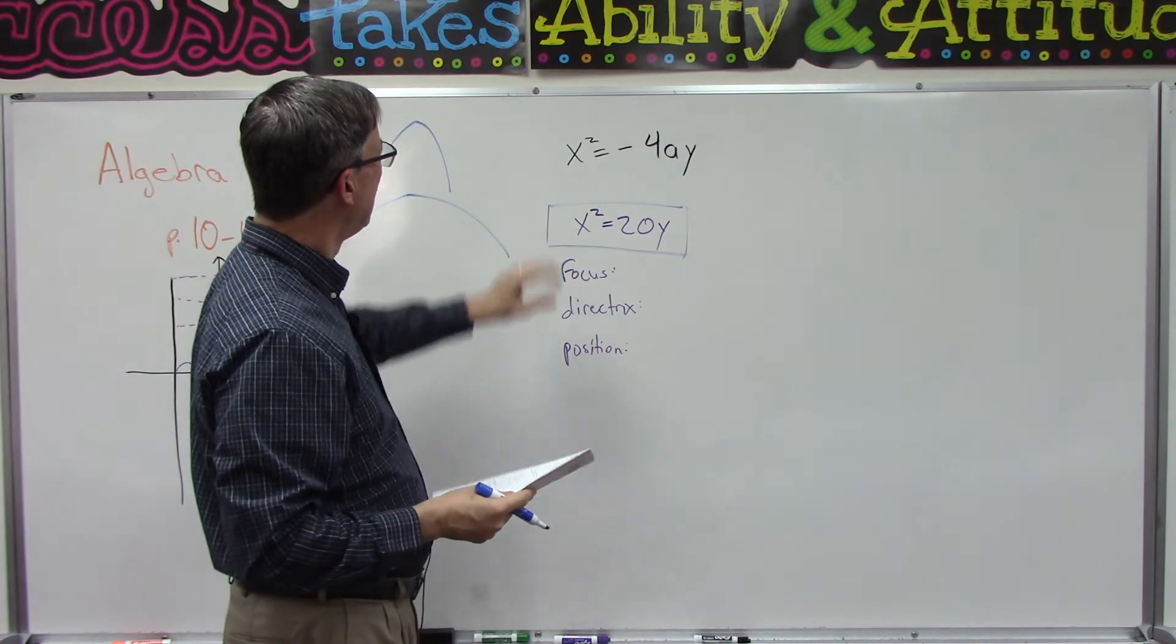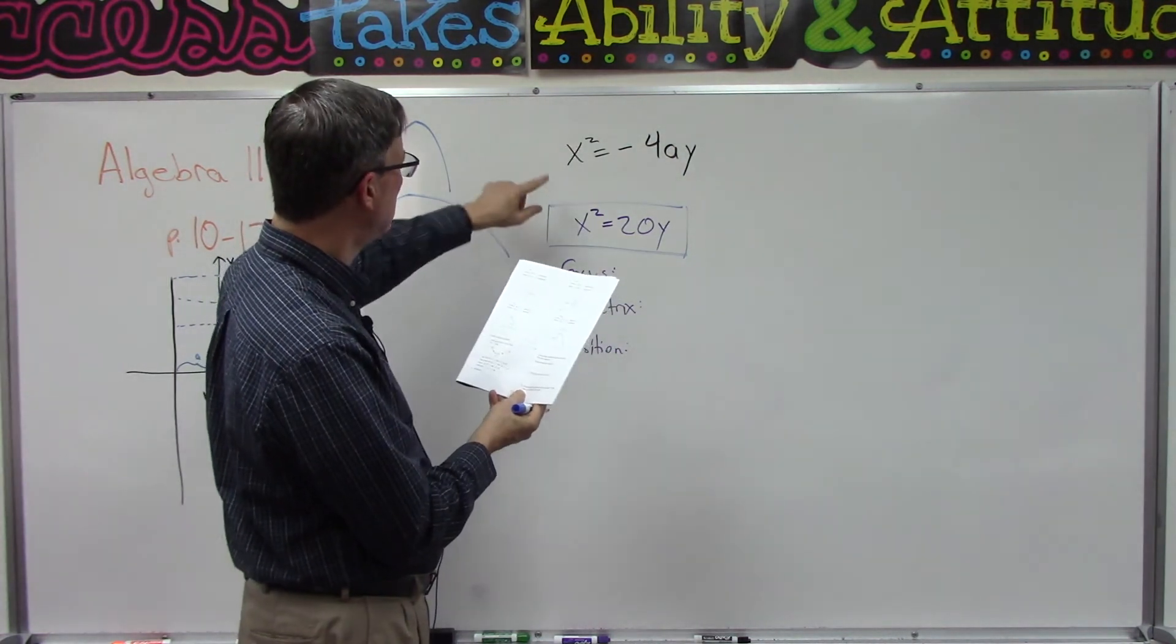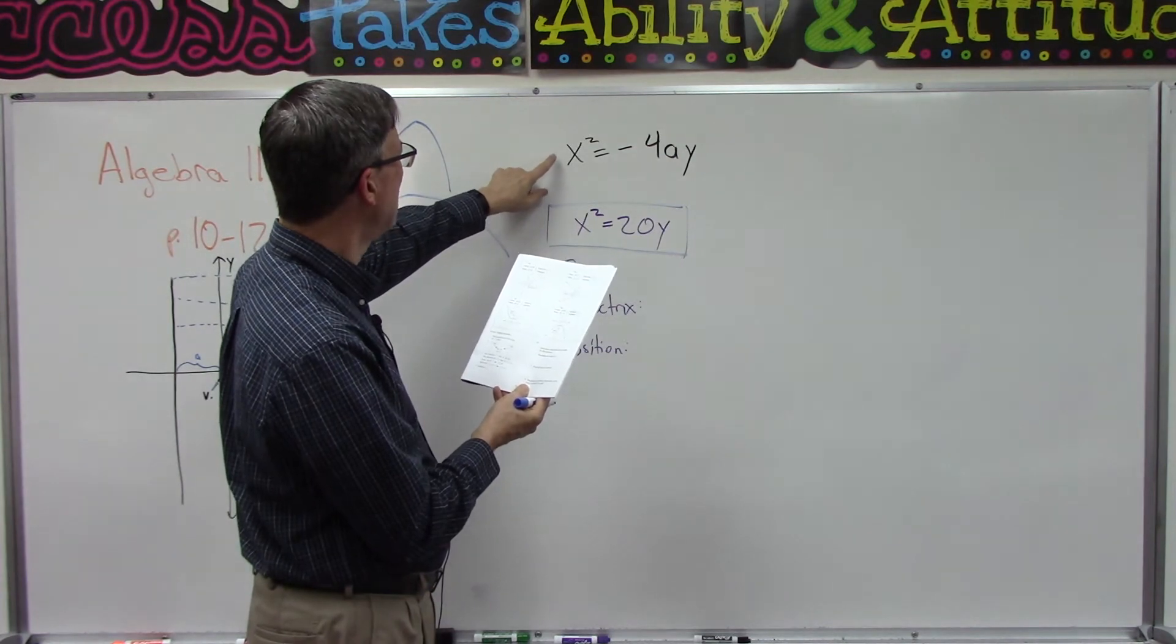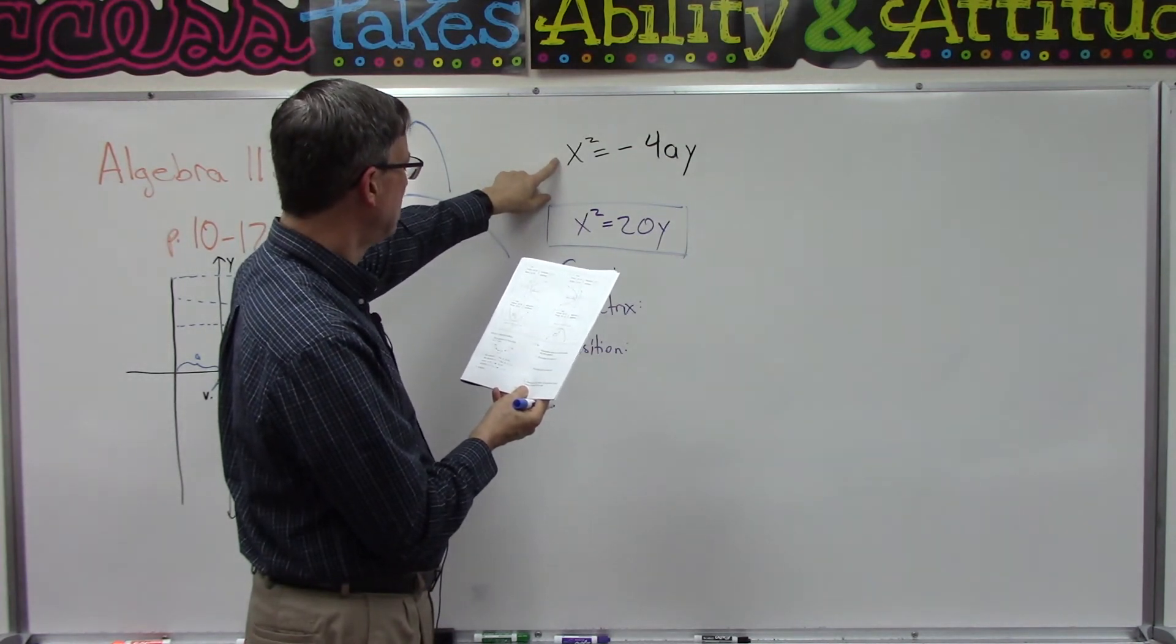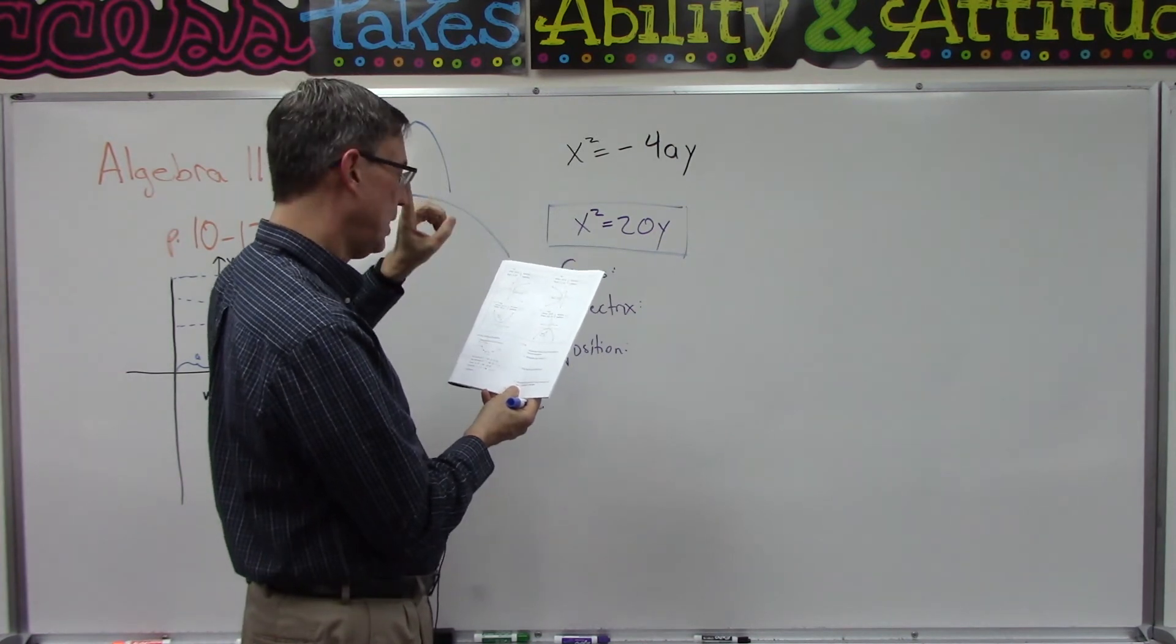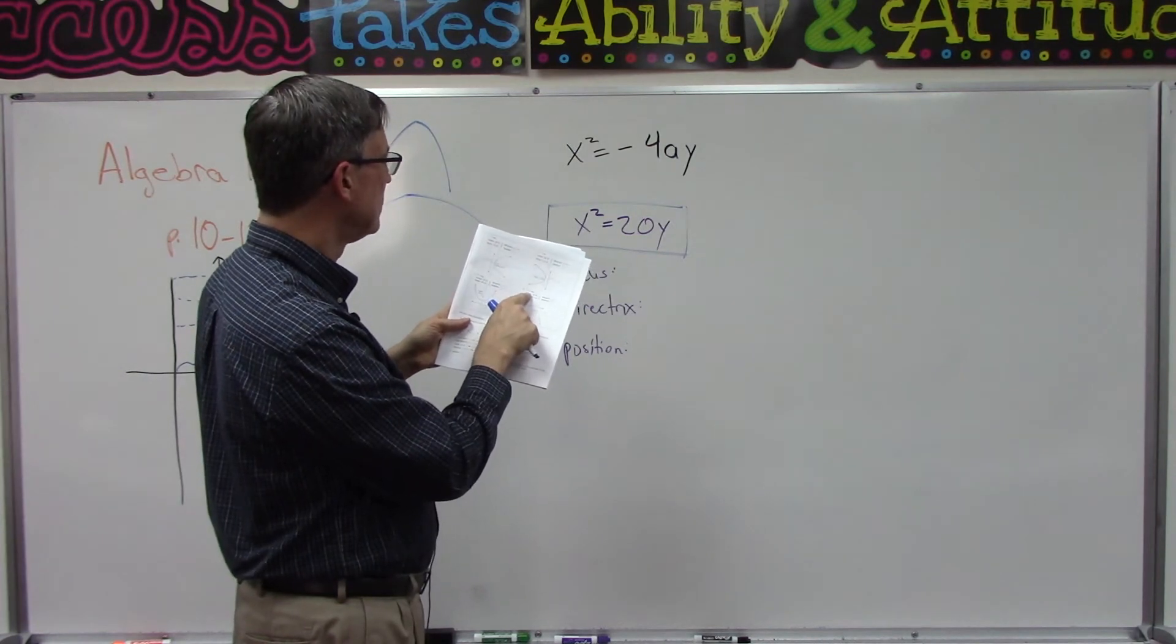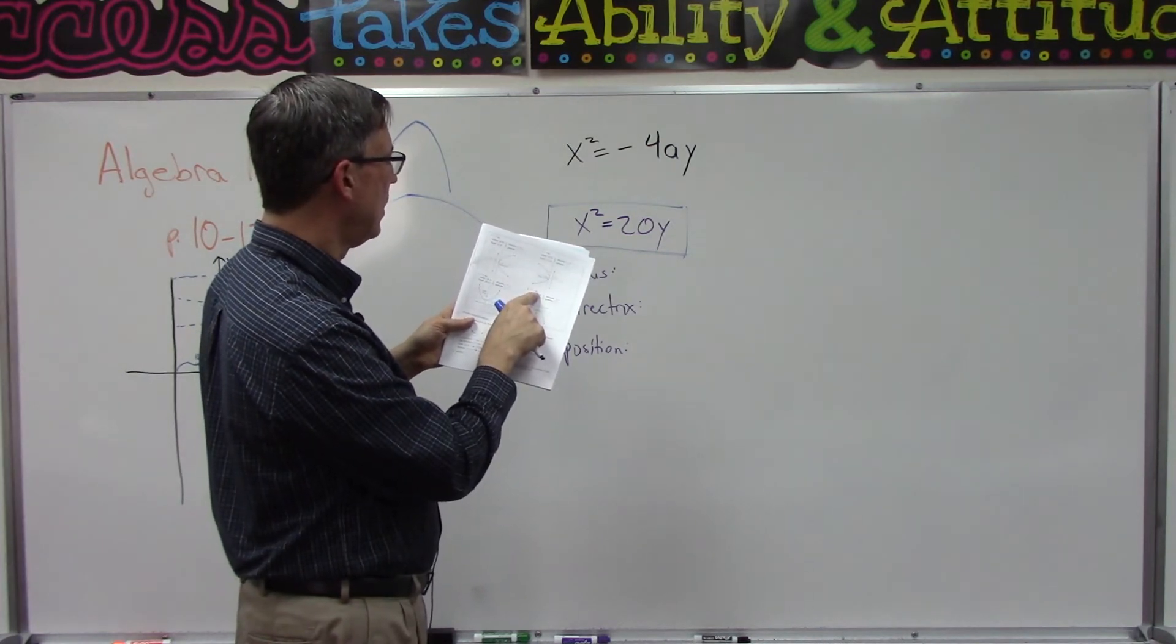So I looked up here and I'm looking, and there's four types here. y squared equals 4ax - nope, similar but not the same. x squared equals 4ay - we're getting close. If I go here to the fourth one, x squared equals negative 4ay - aha, that matches.